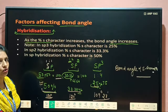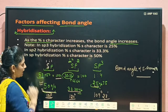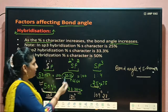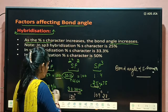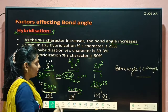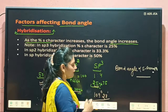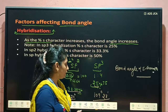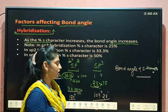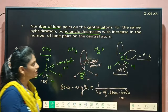If hybridization is SP, bond angle will be 180 degrees. If hybridization is SP2, S character is less, so bond angle is also less at 120 degrees. In case of SP3, S character is only 25%, so bond angle further decreases to 109 degrees 28 minutes. I hope this is clear to you.